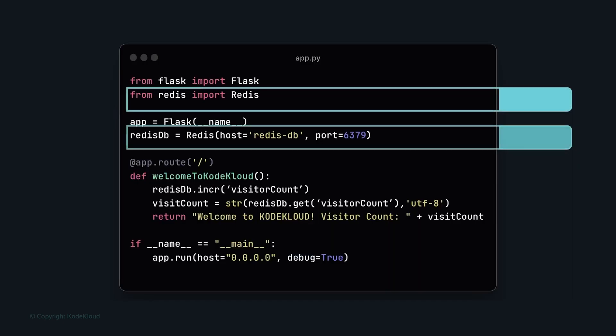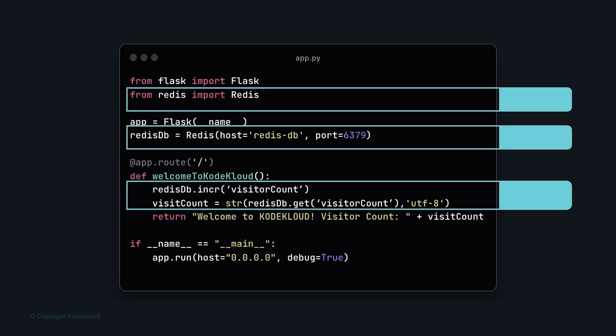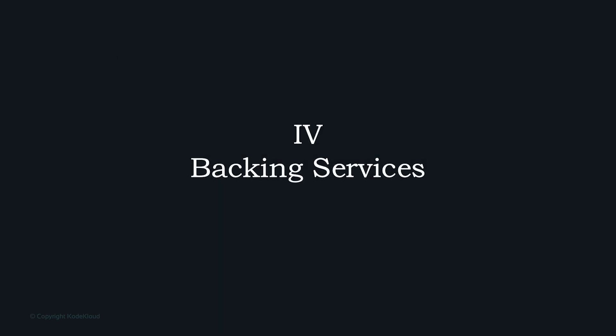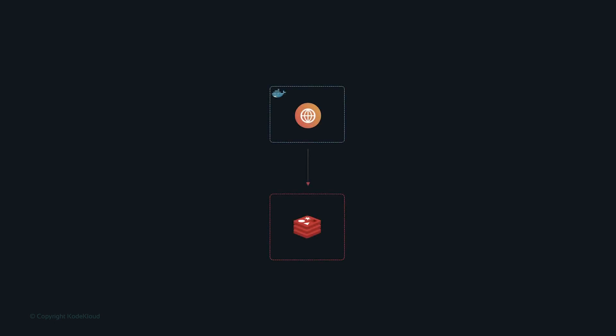We modify the code to store the visit count in a Redis DB. This allows running as many instances as required while ensuring nothing is stored locally, with all instances pointing to the same count. Factor four is backing services — we integrated Redis as a caching service to store the visitor count.